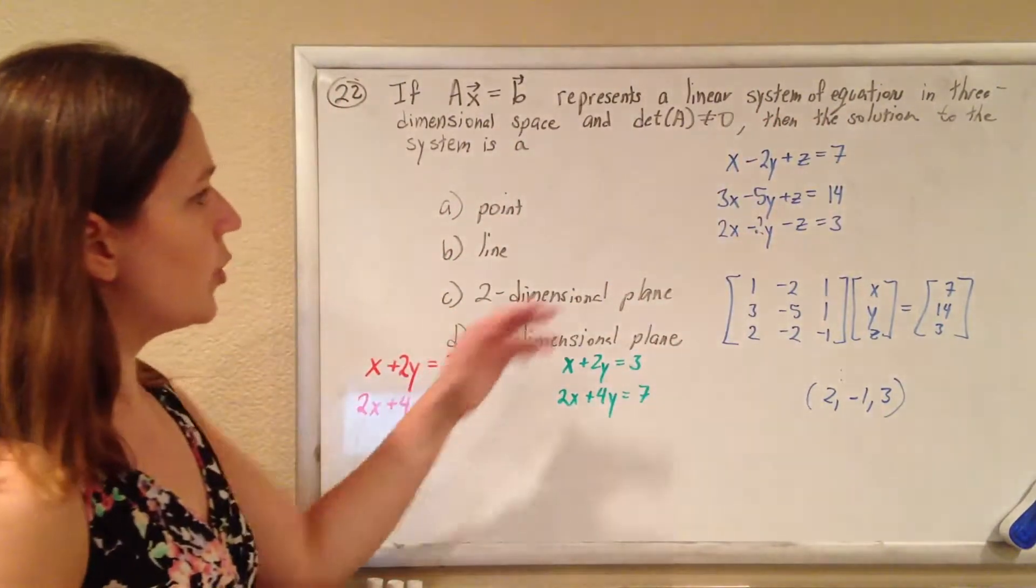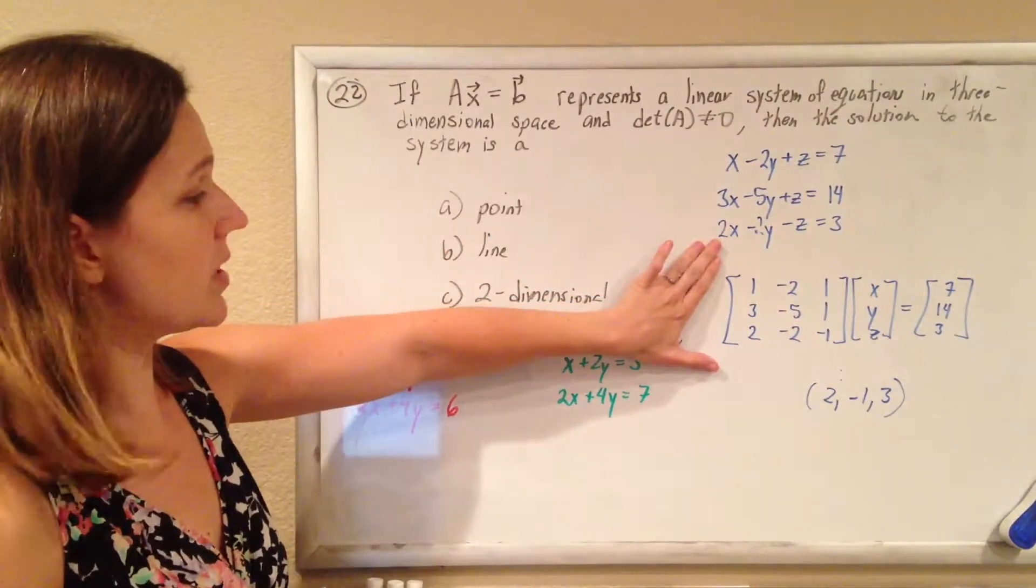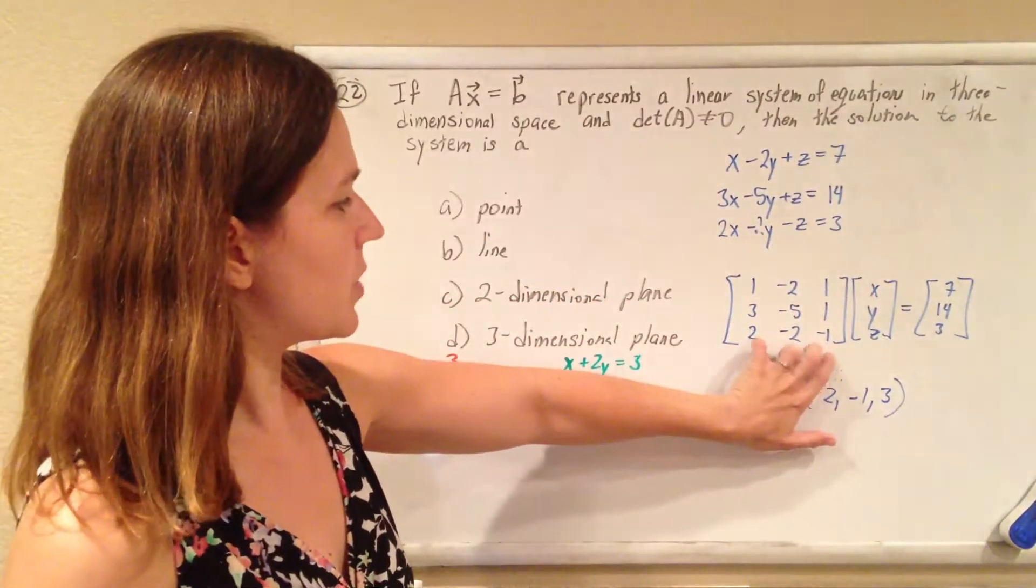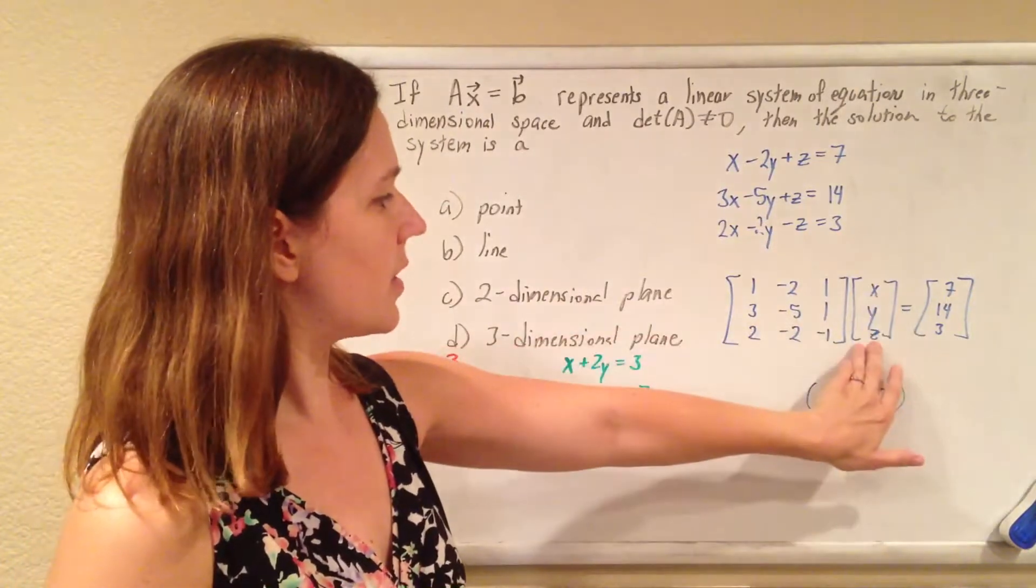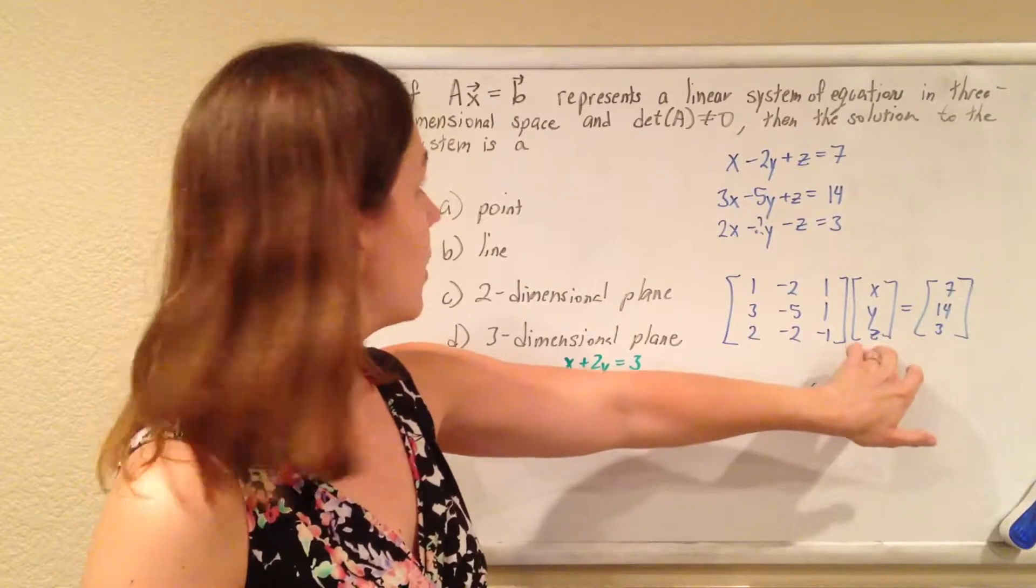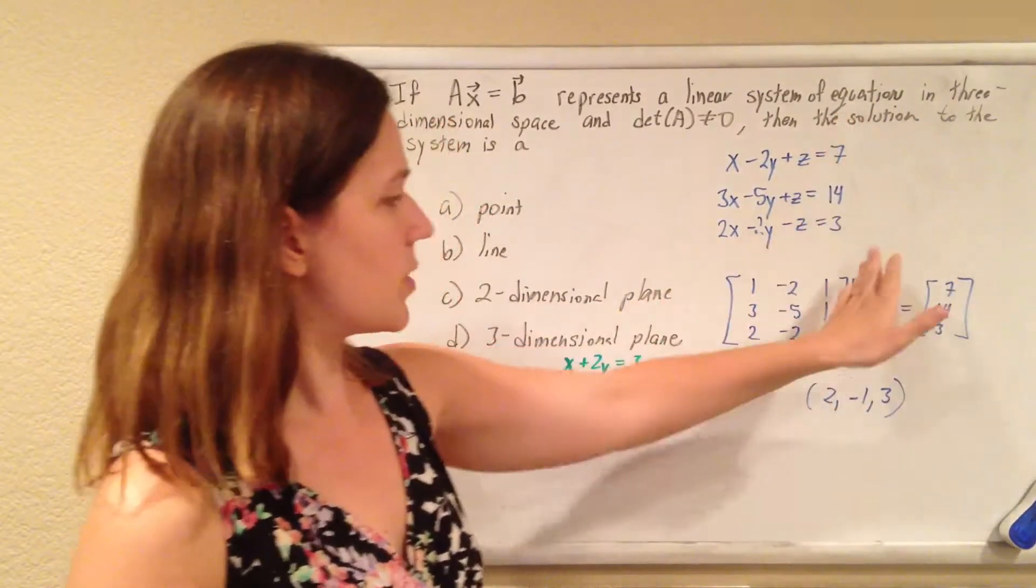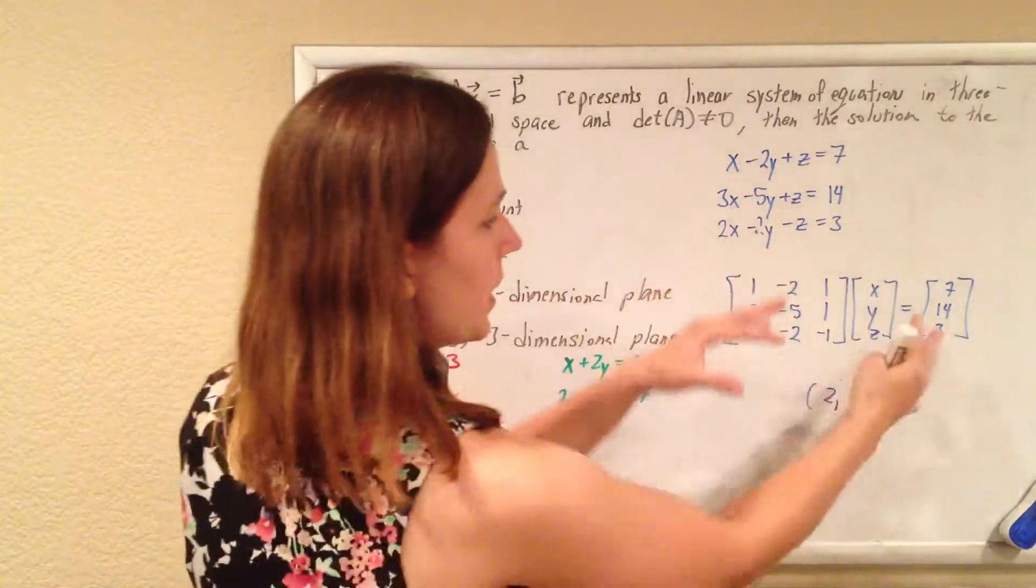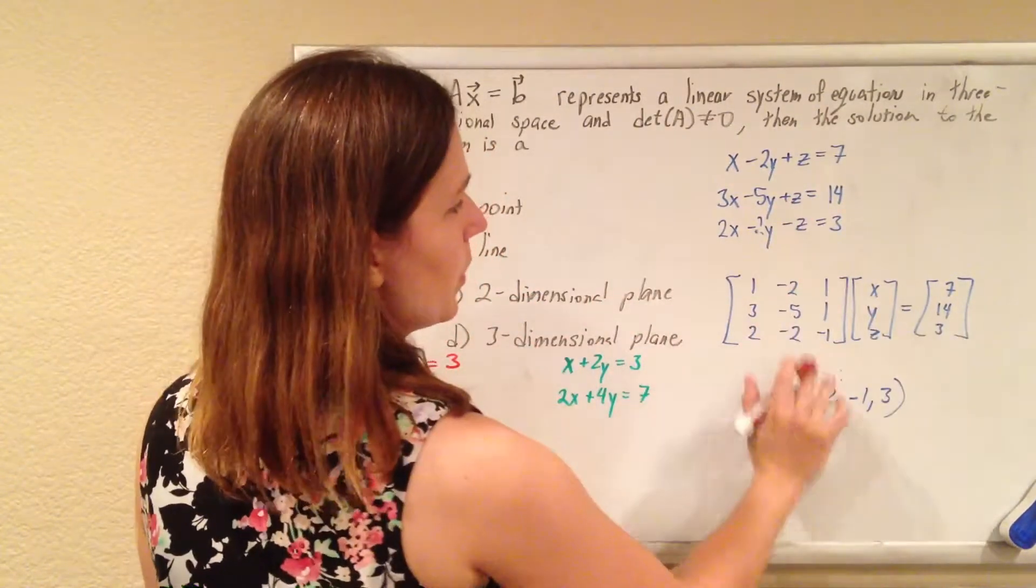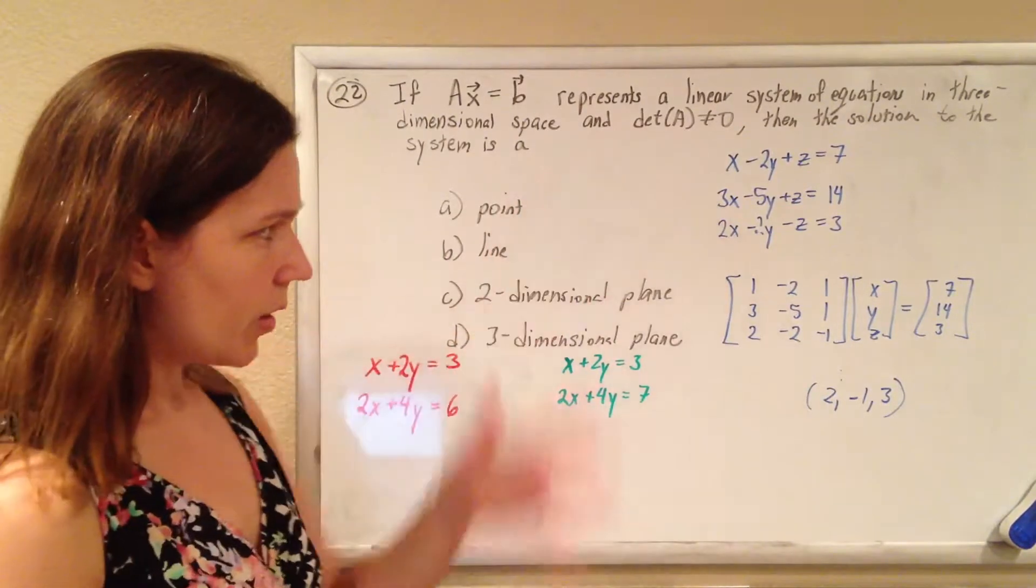And you can write this linear system of equations that you're used to looking at as a matrix equation with the coefficient matrix A times the variable matrix here, x, and then this will equal your answer matrix there. And you can do the little multiplication and see that this matrix equation translates to those three equations there.